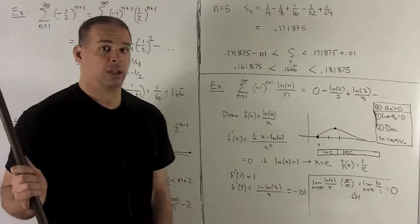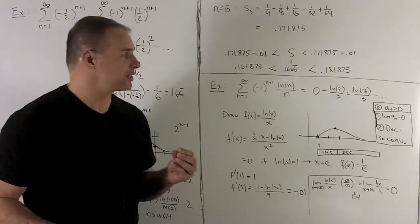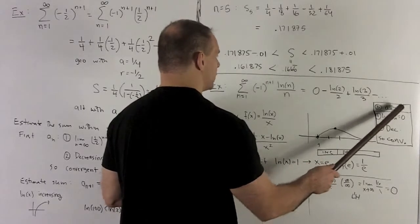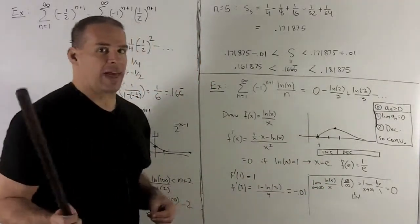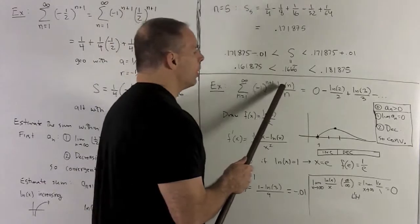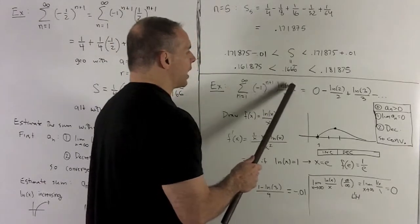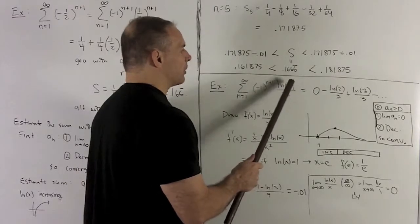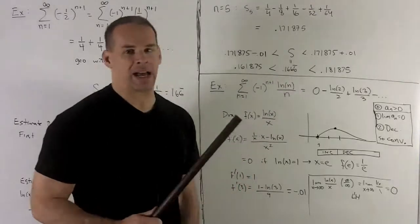We have to check three things. The first thing that I need is that our a sub n's are greater than 0. Now that won't be a problem because I know, we know what the graph of natural log looks like. When I get past 1, x bigger than 1, natural log of x is going to be positive.